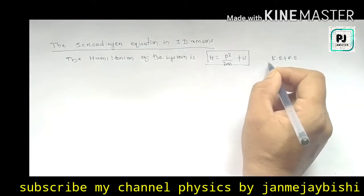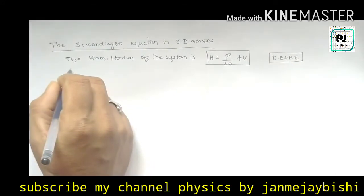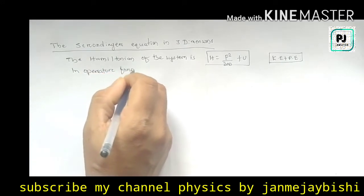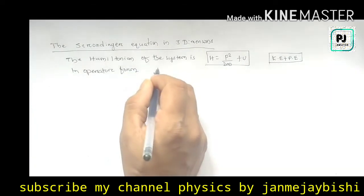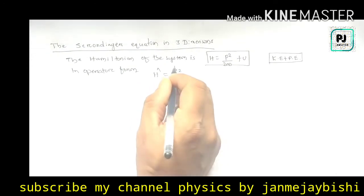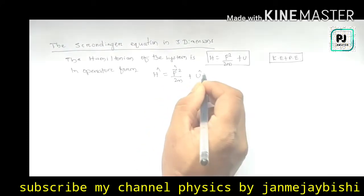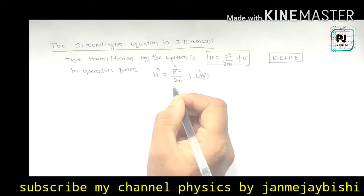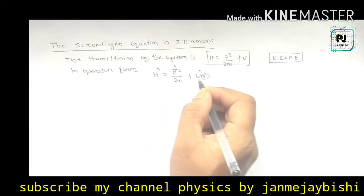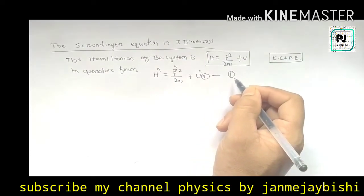So now in operator form, we can write H-cap is equal to p² divided by 2m plus U(r). Here p² represents the kinetic energy associated plus potential energy.